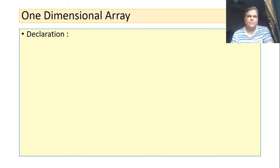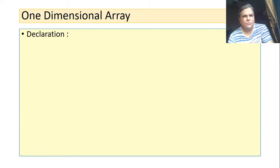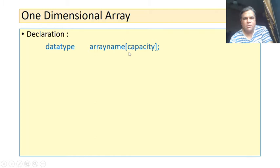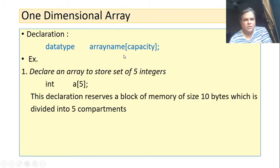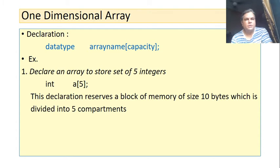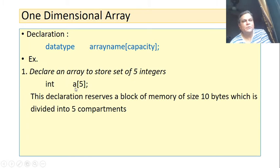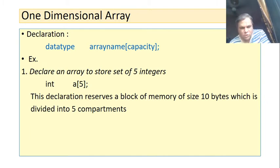Let us begin with the declaration — how do we declare an array in our program? The declaration syntax is quite simple. Like a normal variable, we need to specify the data type, then the name, and then, most importantly and differently, we need to specify the capacity inside a square bracket. For example, to declare an array to store five integer values: we write int, then the name a, then [5] in square brackets. The name of an array follows the rules of identifiers.